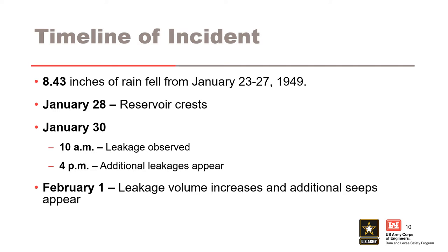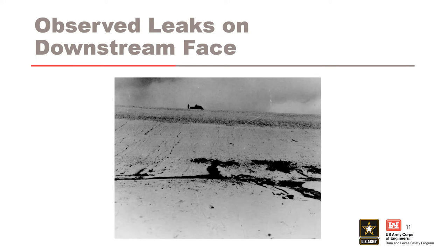Three days later, the leakage volume increased and additional seeps appeared between stations 10+00 and 14+40. This is a photograph from 1949 of one of 30 or more initial leaks that appeared on the downstream face of the dam at the closure section. The leakage appears to be carrying fine-grained material. The silhouettes of two people standing on the crest of the dam next to a car can be seen in the background.